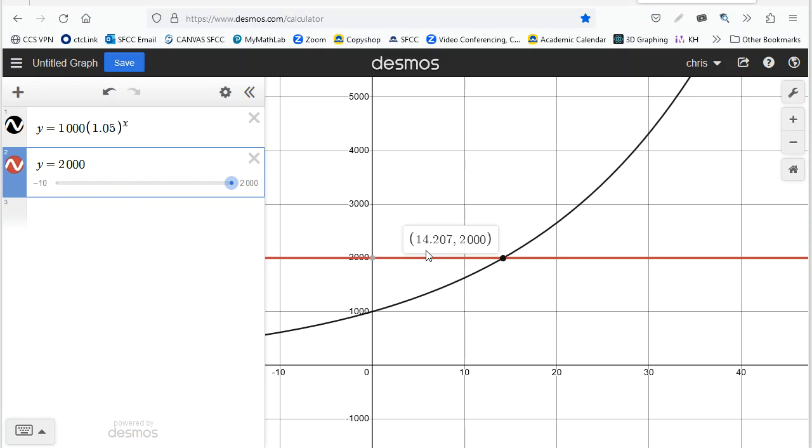The X value of that point is 14.2. The Y value is 2,000. What is that telling me? It's telling me when N is 14.2, Q sub N is 2,000. So in other words, 14.2 years. How easy is that? Don't you love it?